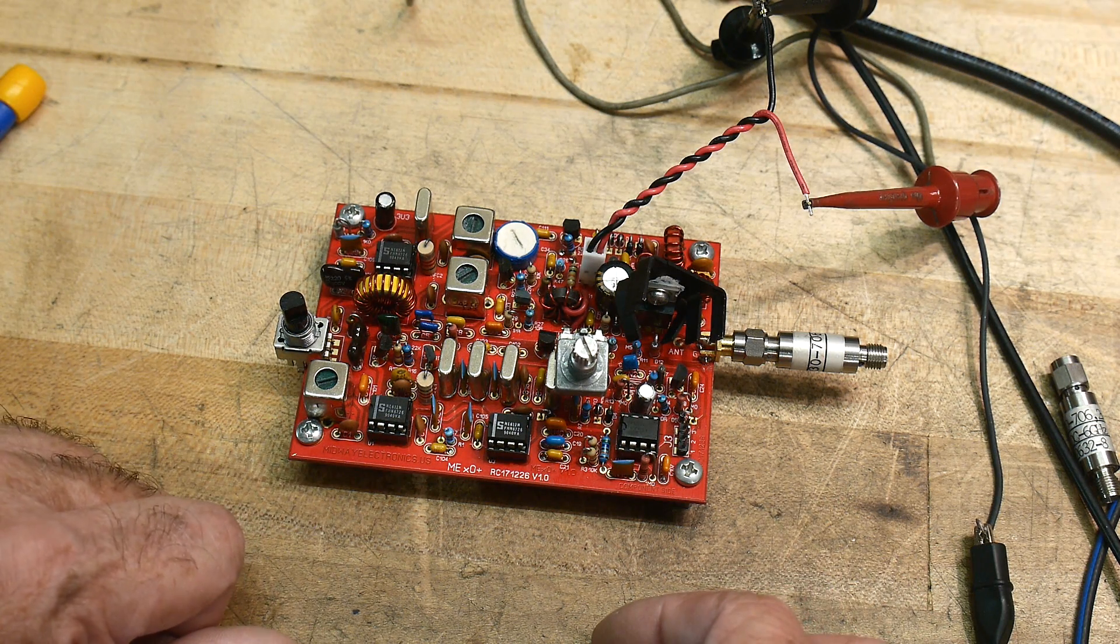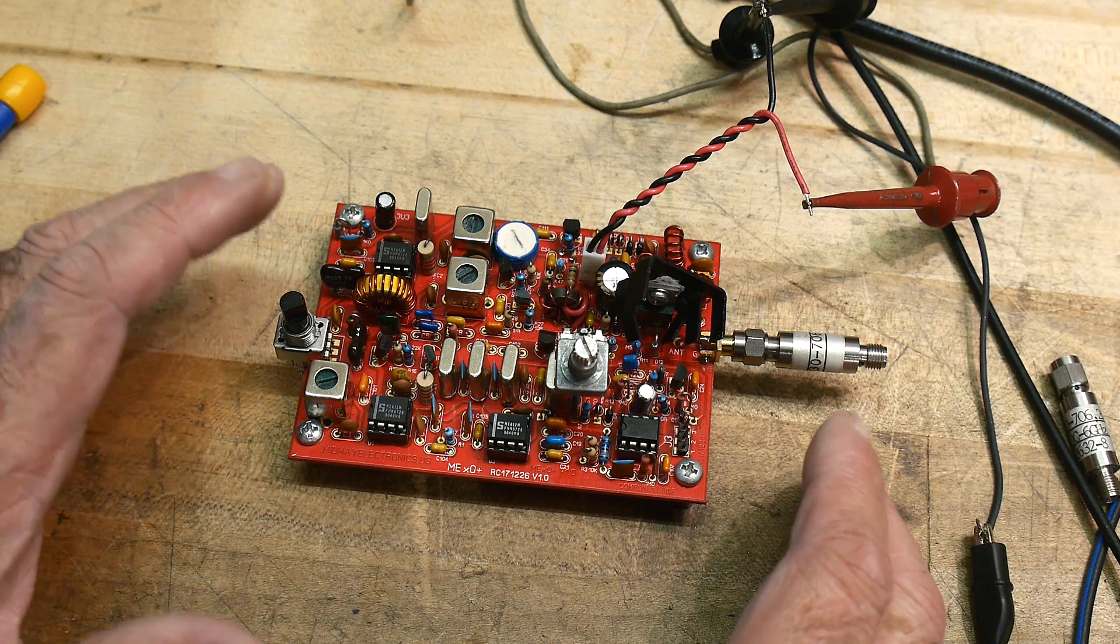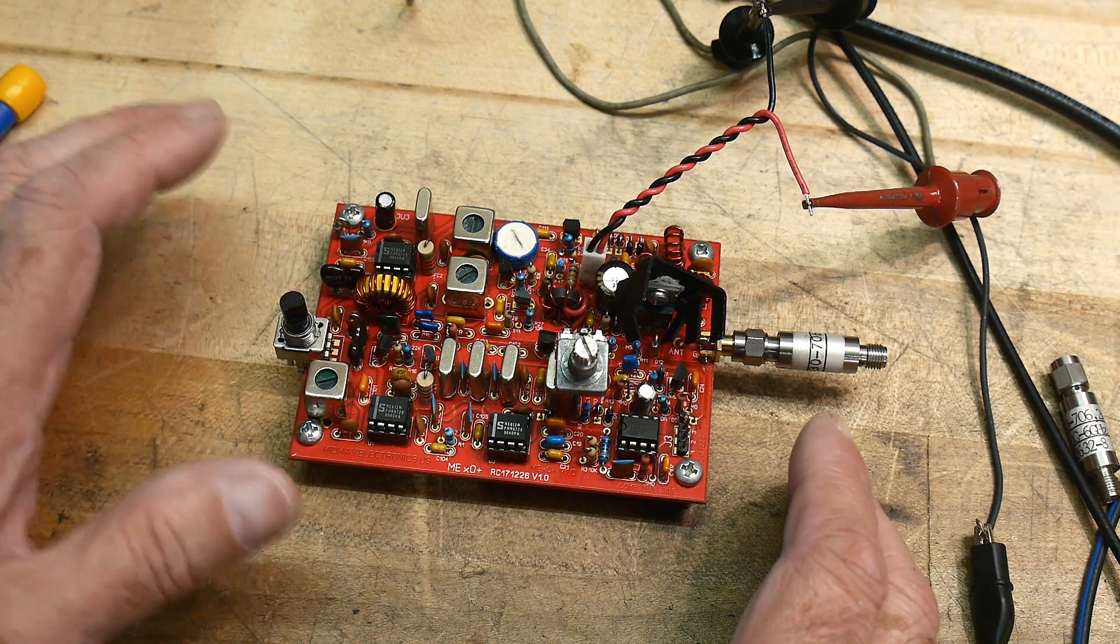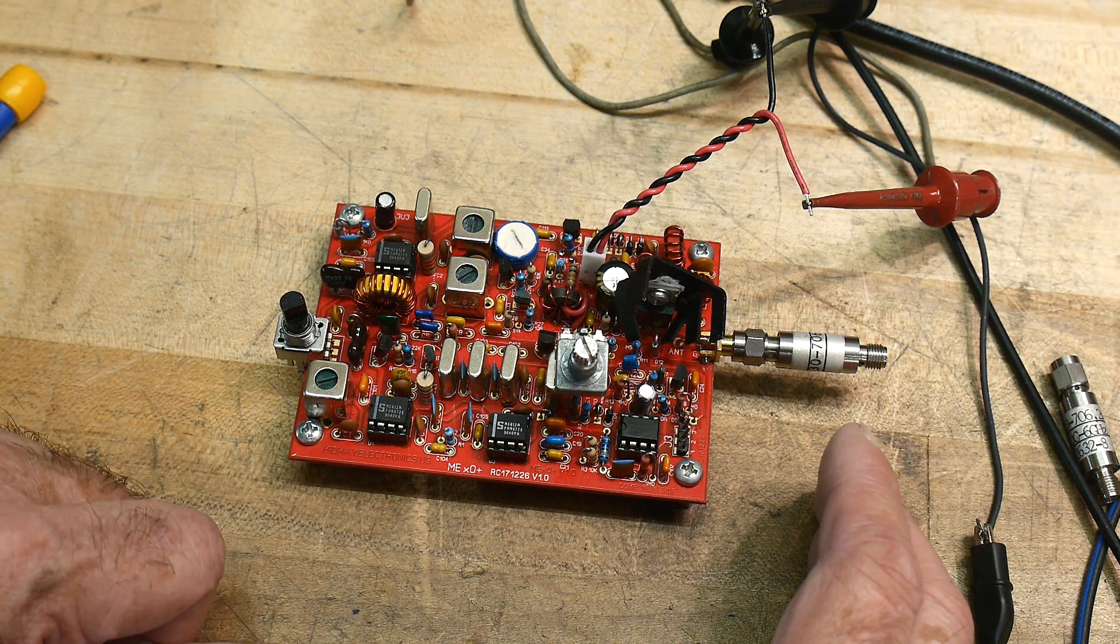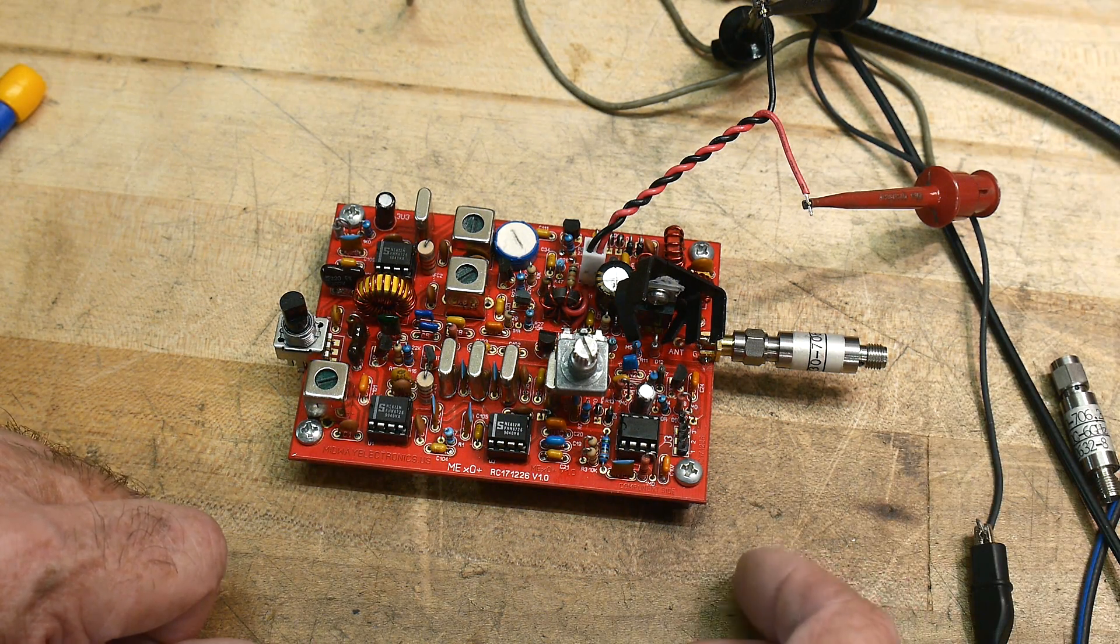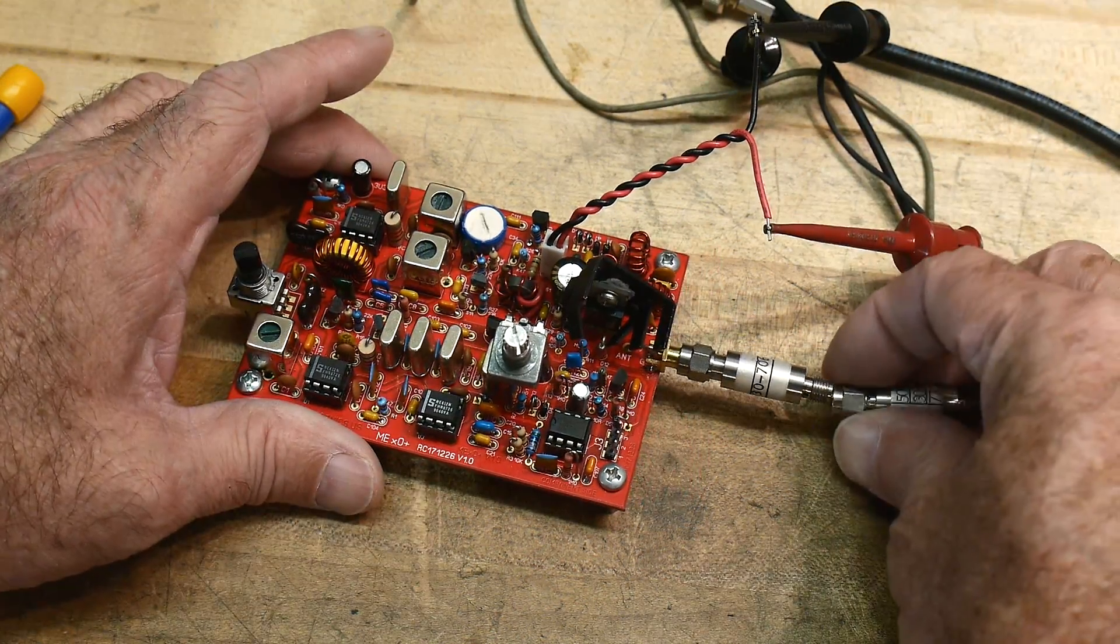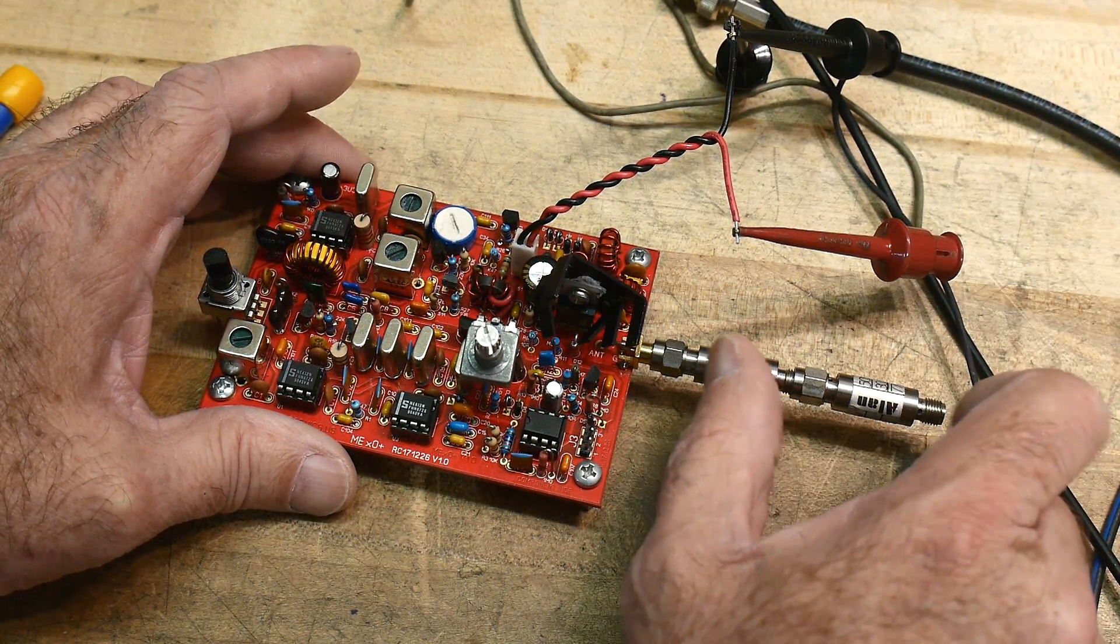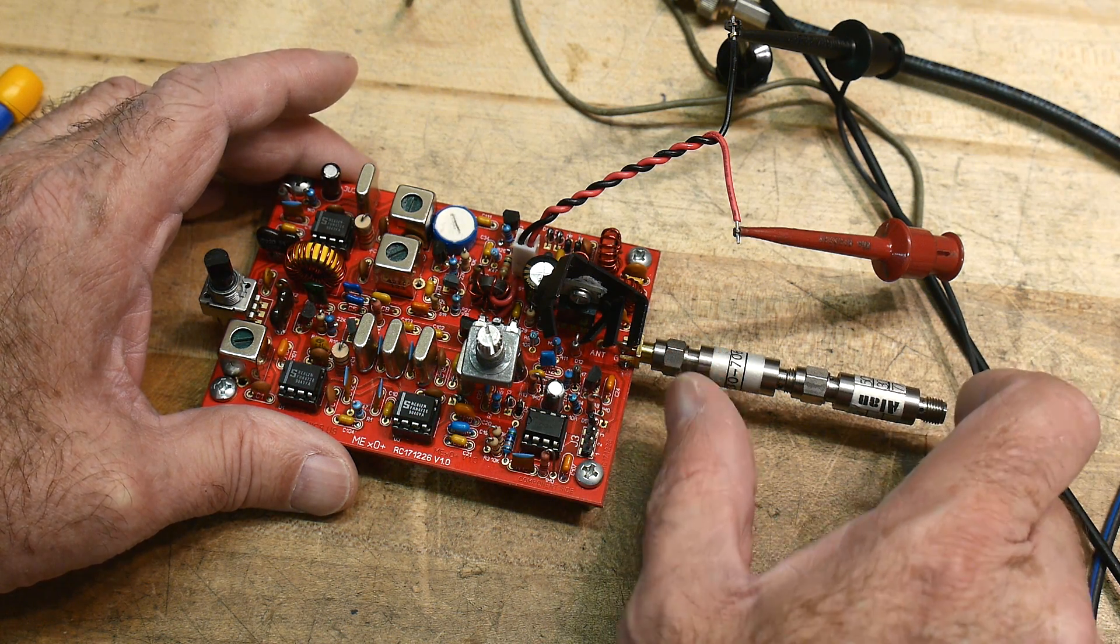Well, my experience is if you look up the specification for an S9 signal, which is a loud signal, a good signal, it's at minus 73 dBm. So I have my generator set to minus 13 dBm, and then I have 60 dB of attenuation. So 13 dB plus 60 dB is minus 73 dBm.